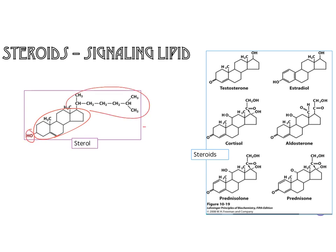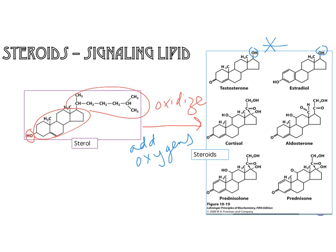The structural basis for steroids is the steroid nucleus. When you oxidize sterols — and in biochemistry oxidizing means adding oxygens — you get steroids. Here is a table of some steroids; you'll notice they all have at least one more OH or oxygen added somewhere. Sometimes the alcohol is a ketone instead. All steroids are oxidized sterols.